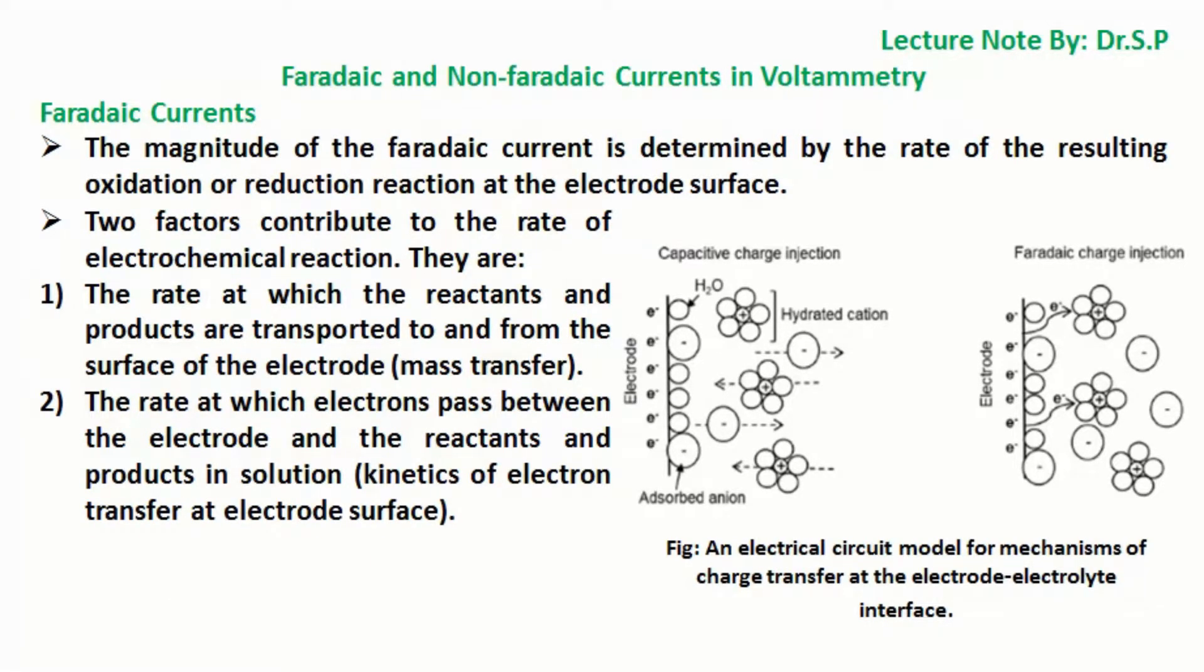The magnitude of the faradaic current is determined by the rate of the resulting oxidation or reduction reaction at the electrode surface.